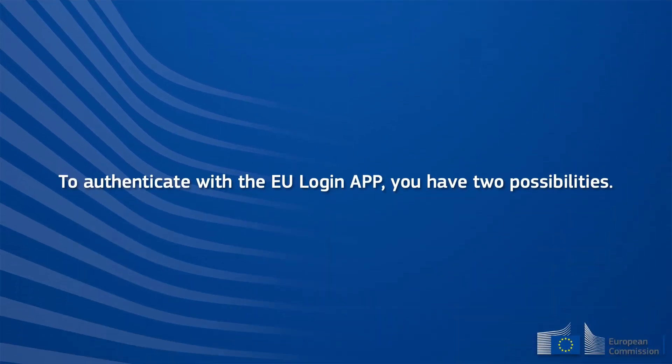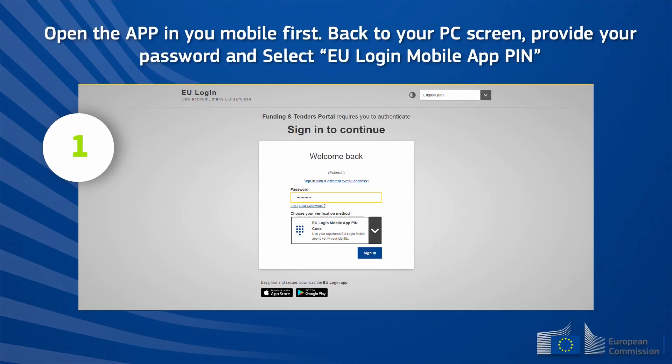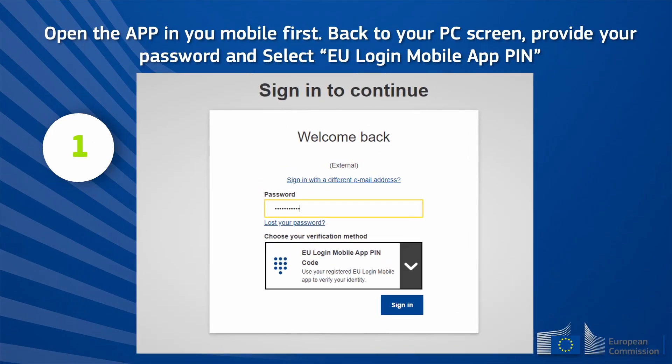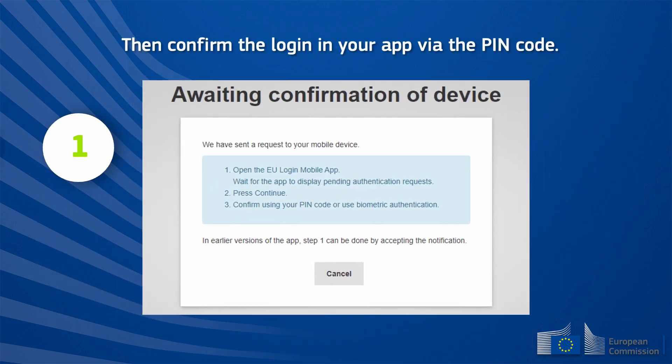To authenticate with the EU Login App, you have two possibilities. Option one: open the app on your mobile first. Back on your PC screen, provide your password and select EU Login Mobile App PIN Code. Then confirm the login in your app via the PIN code.